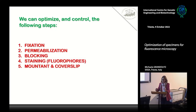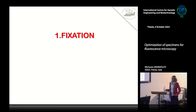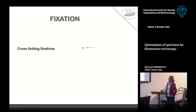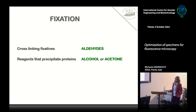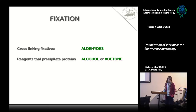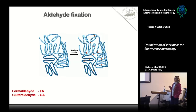Let's start from fixation. We routinely use mainly two types of fixation in our labs: one with cross-linking fixatives — meaning aldehydes — and the other with reagents that precipitate proteins, like alcohol or acetone. So let's move to aldehyde fixation. Aldehyde fixation works because of the formation of cross-linkings between amino groups.